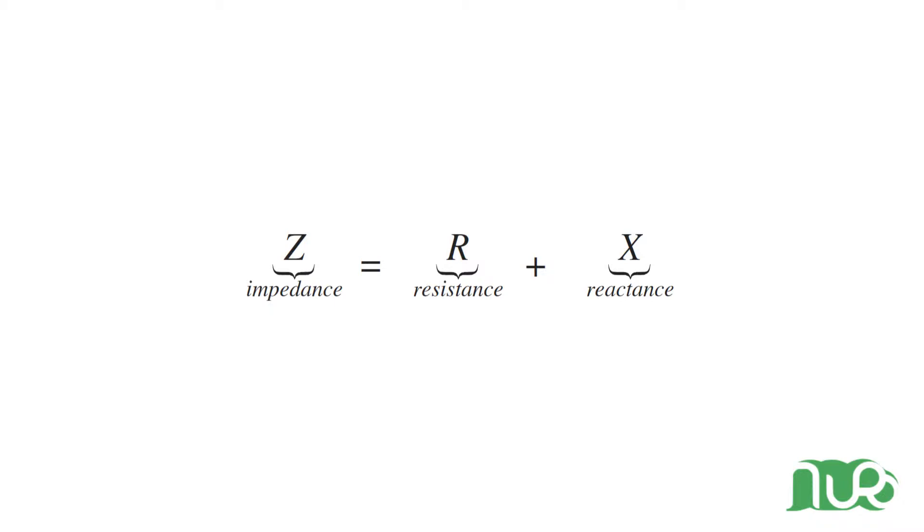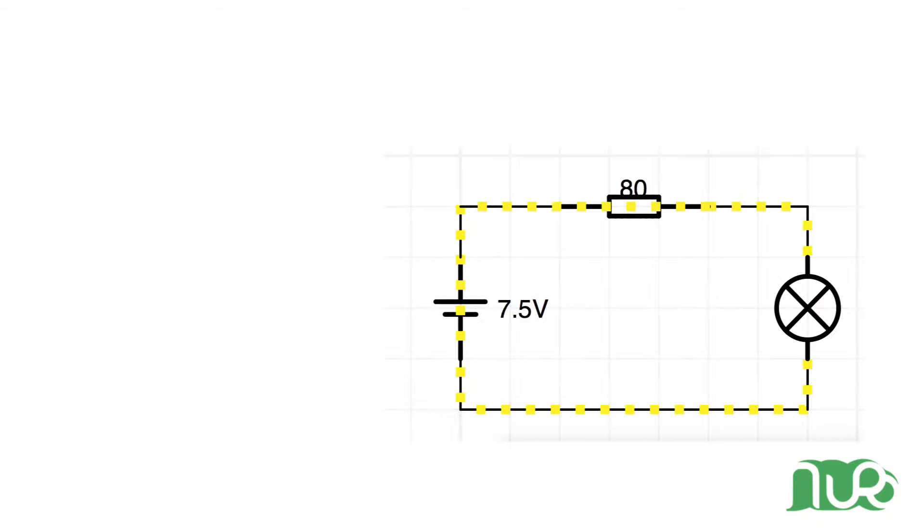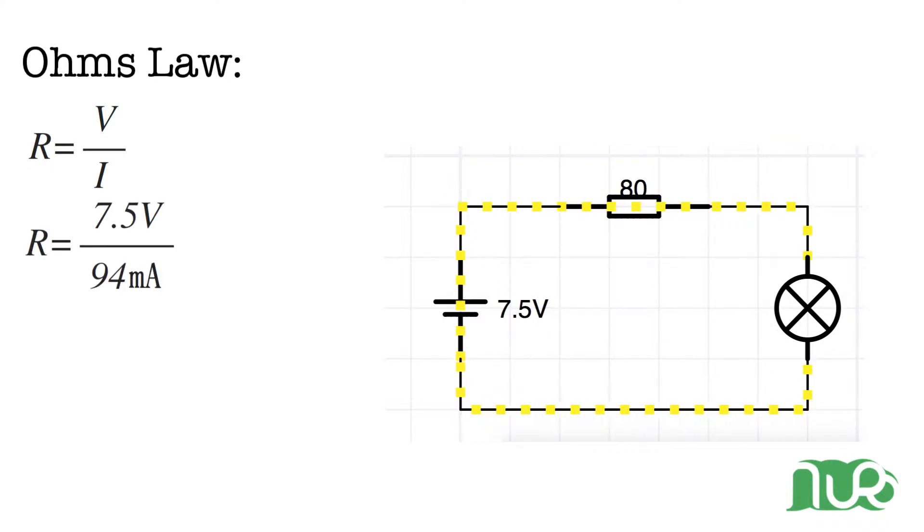But let's have a quick look at the resistance first. The unit for resistance is Ohm and we can calculate the resistance in our basic circuit by using Ohm's law. Ignore the lamp, although it is a resistor. If we want 94mA of current flowing through our lamp, we can calculate the size of the resistor we need. At 7.5V and 95mA this turns out to be around 80 Ohms to get the current we want. So far so good.